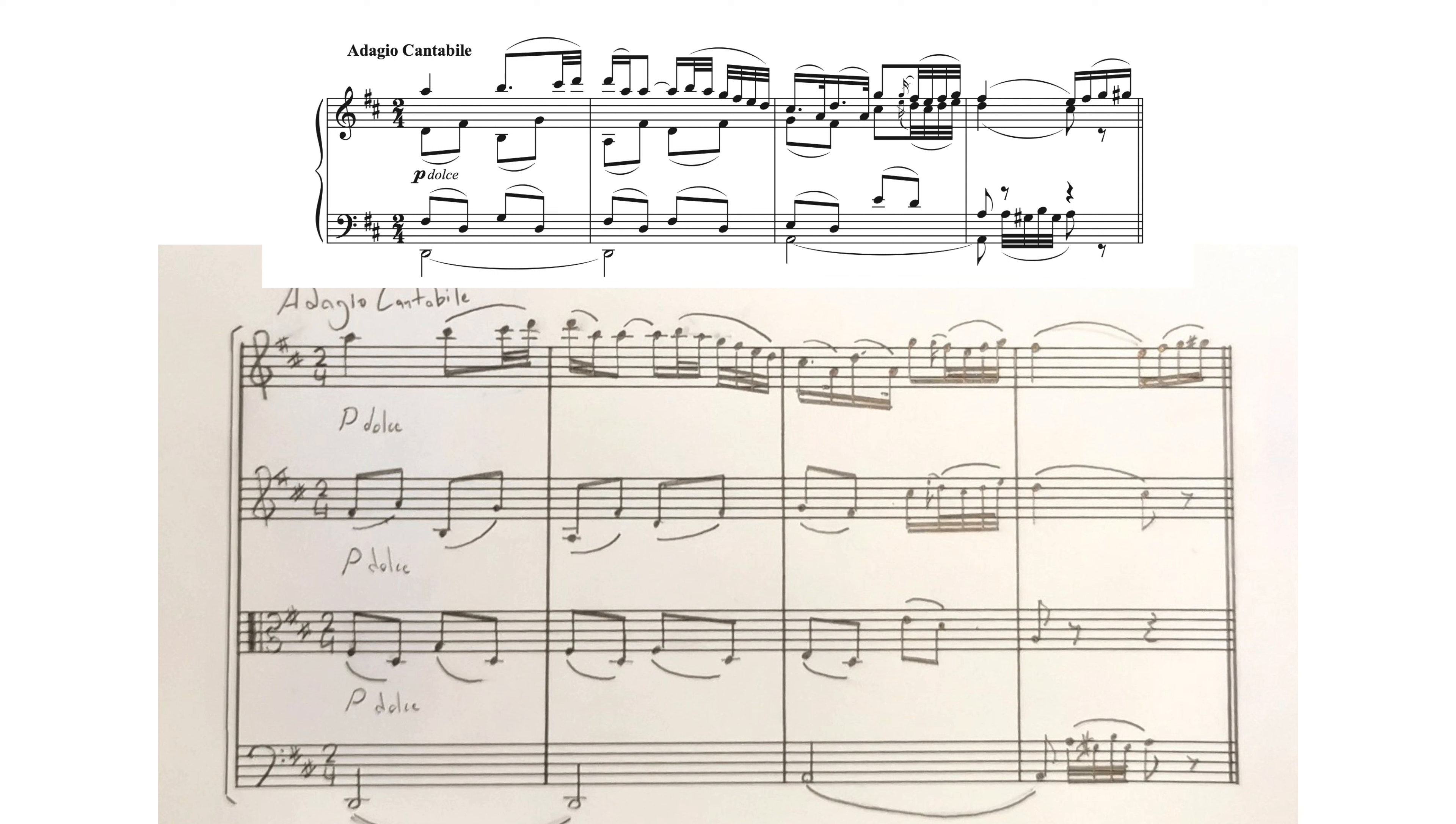Now in the open position score every single string part requires a piano marking. So the first violin needs it, the second violin needs it, the viola needs it, and the cello needs it as well. I've also included the dolce which means sweet and it is beside every dynamic marking. Dolce would be called an expression marking and every single instrument got its own expression marking.